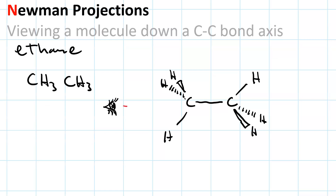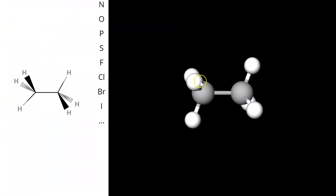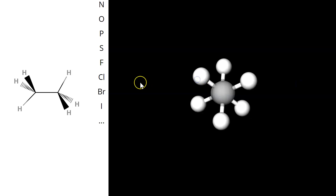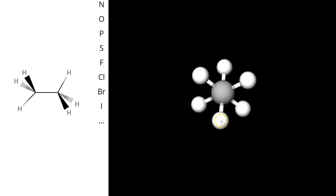Now to draw our Newman projection, we are going to take our eye and look straight down the carbon-carbon bond axis. Here we are looking from the left hand side of the molecule. Doing that is really equivalent to changing the angle at which we view the molecule. And this is what we see. This is the hydrogen on the left hand side of our bond line structure that's on the wedge. This is the one on the dash. This is the one going straight down and to the left.